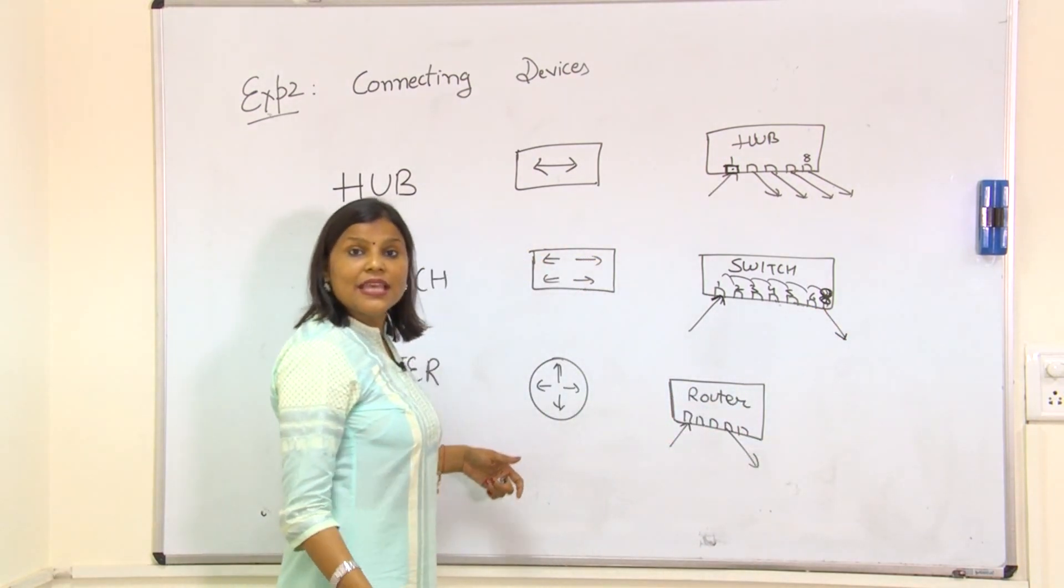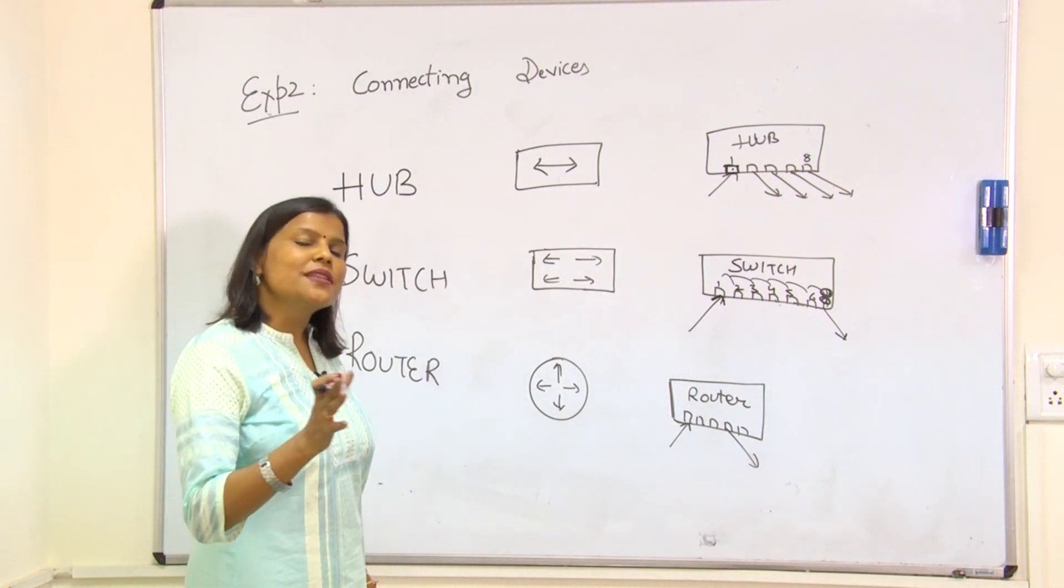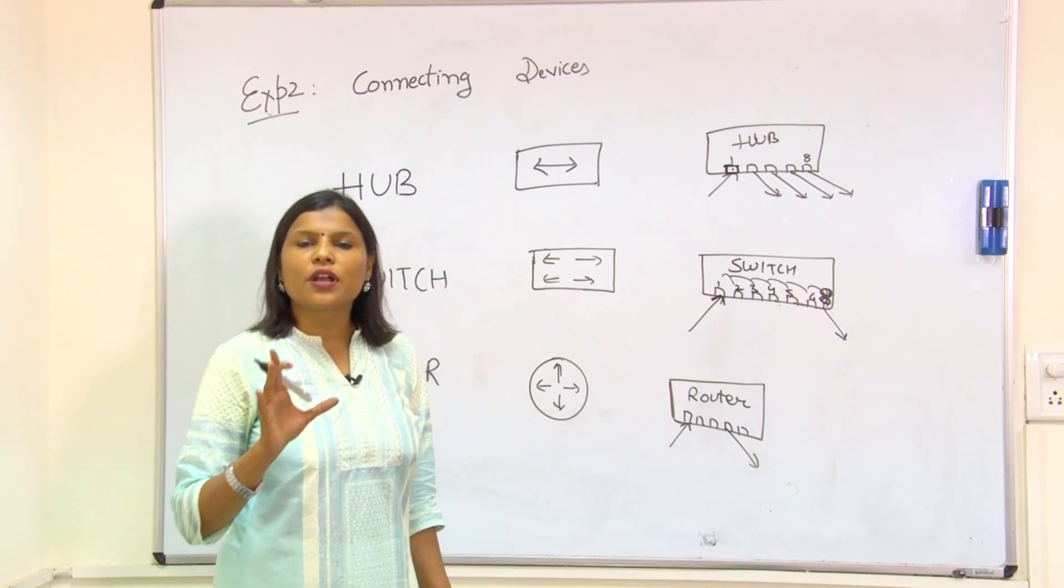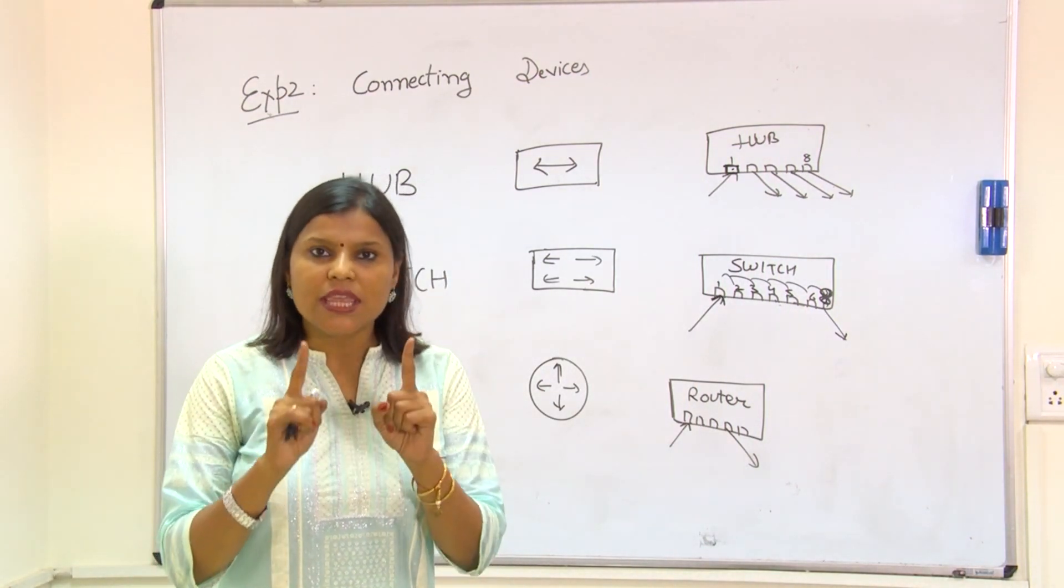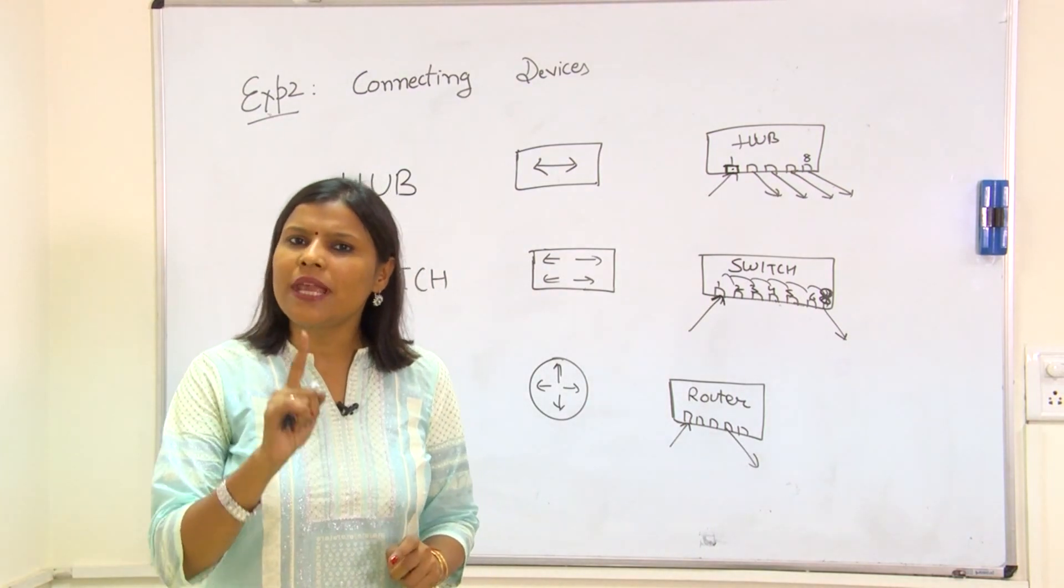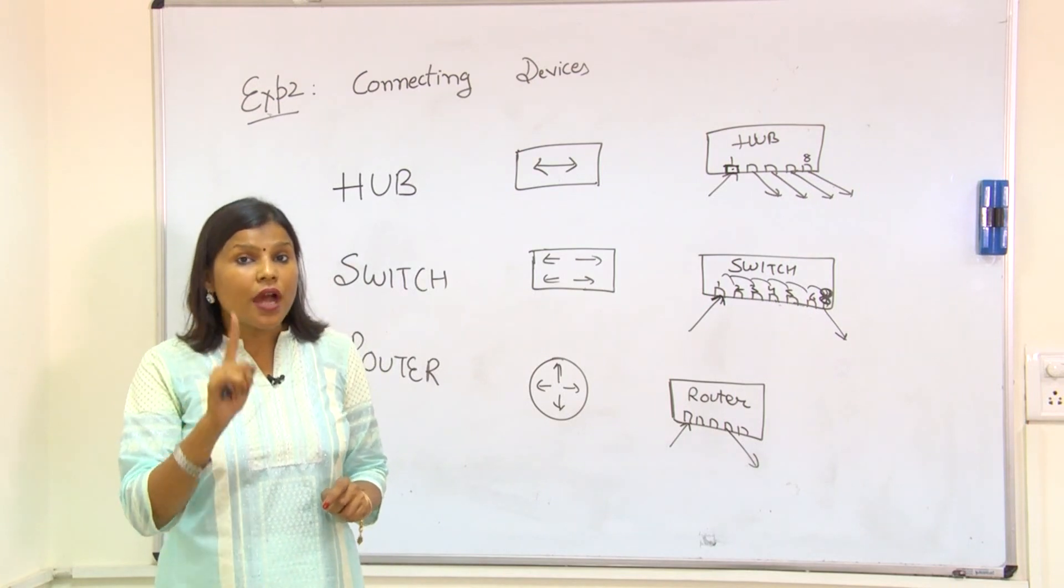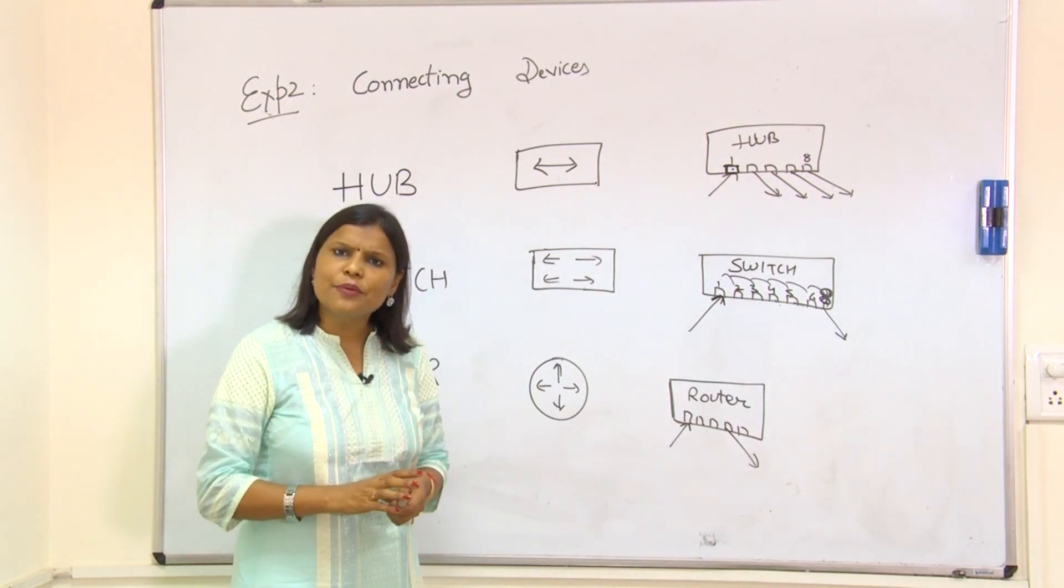This is called a switch. Now, what is a router? Router is used to connect two different networks. Hub and switch are meant for connection within one network, and router is used to connect different networks.